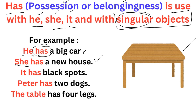Next: 'It has black spots' — uske oopar black spots hai. Has is used here because 'it' is there. 'Peter has two dogs.' Why has with Peter? Because here we are talking about one person — ek person ki baat ho rahi hai. Peter ke paas two dogs hai, that's why has is used. He, she, it are not there, but we are talking about one person, and singular nouns ke saath has use hota hai.